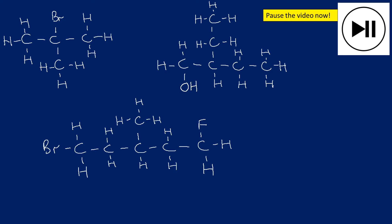Now let's look at some with other functional groups — haloalkanes and alcohols. Again, have a go yourself first, then unpause to see the answers. For the first one: three carbons — one, two, three. On the second carbon there's a bromine, so I do show that bond to the bromine, and there's a CH₃ methyl group as a side chain. That's the skeletal formula for number one.